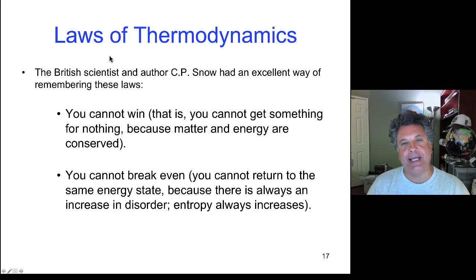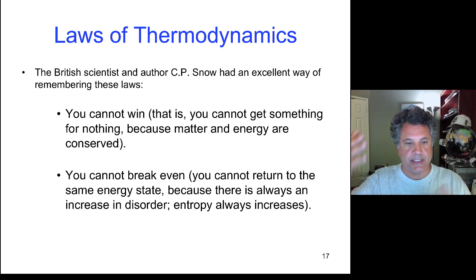Now the British scientist C.P. Snow had an amusing way of stating the first and second law. The first law is you cannot win. That is, you can't get something for nothing because matter and energy are conserved. So no perpetual motion machines. You cannot win that game. Energy is always conserved. First law. Second law: you cannot break even. You cannot get back to the same energy state, high energy state, because there is always an increase in disorder. Entropy always increases.